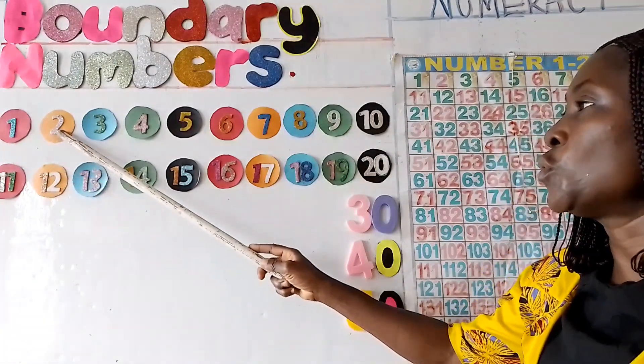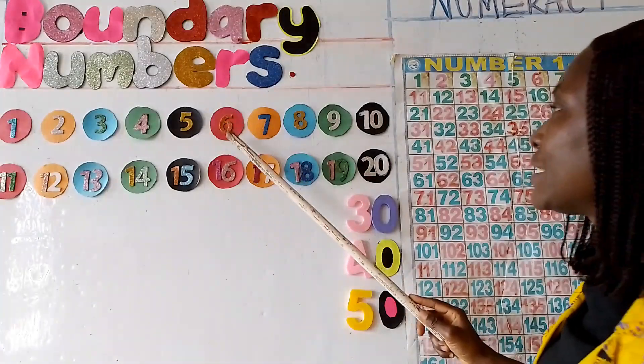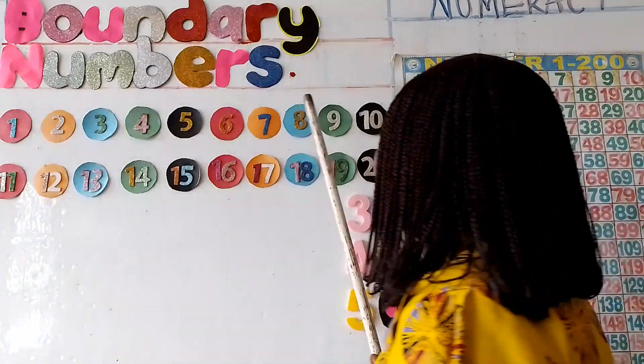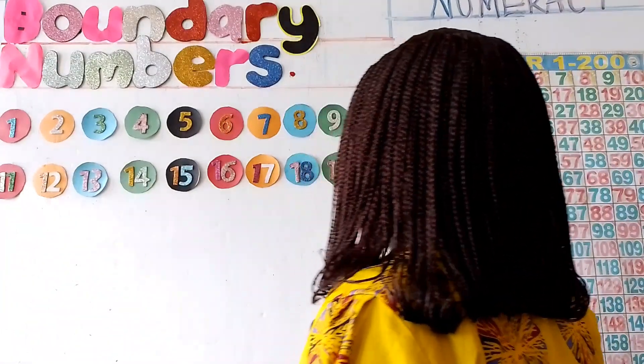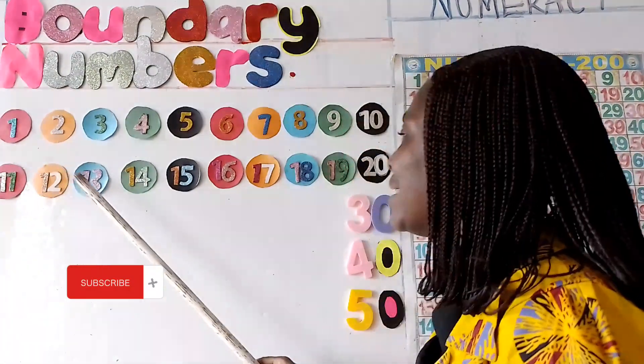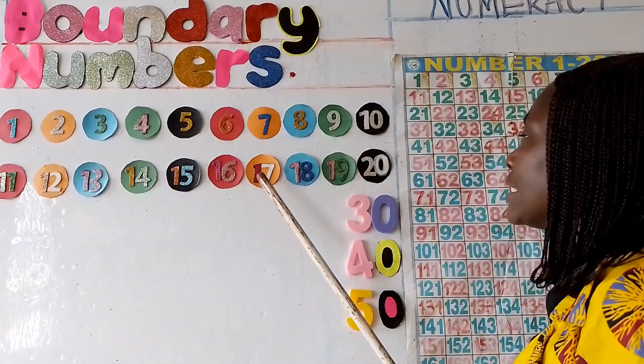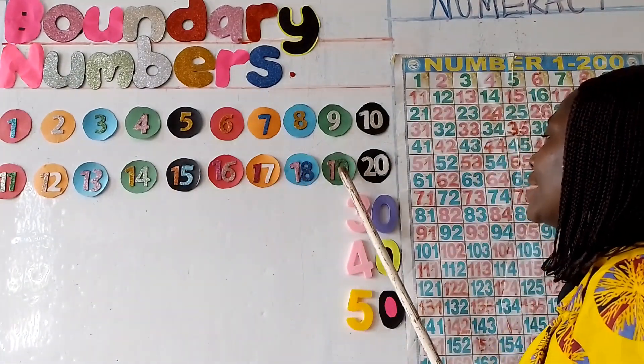1, 2, 3, 4, 5, 6, 7, 8, 9, 10, 11, 12, 13, 14, 15, 16, 17, 18, 19, 20.